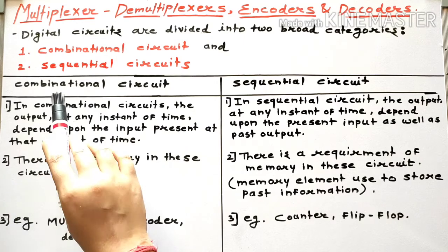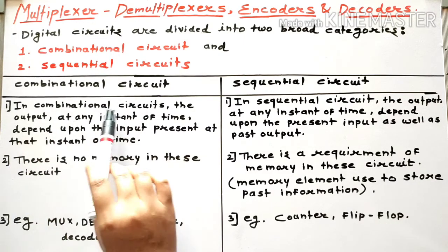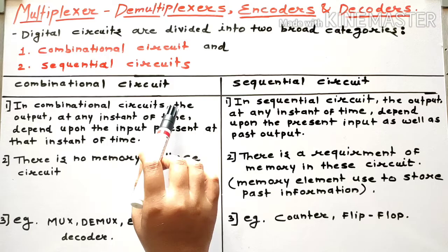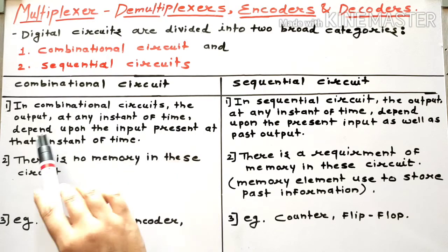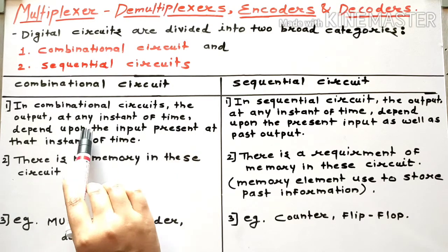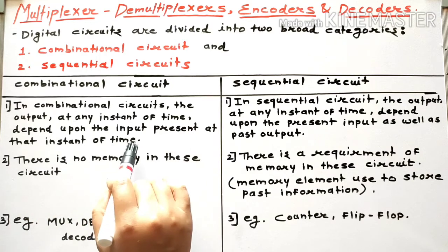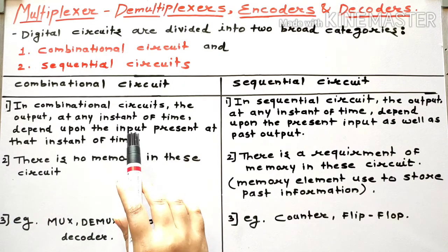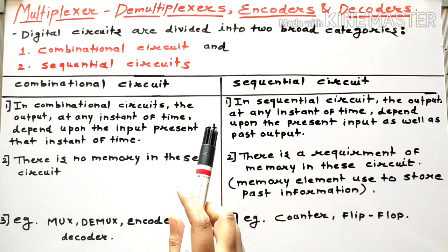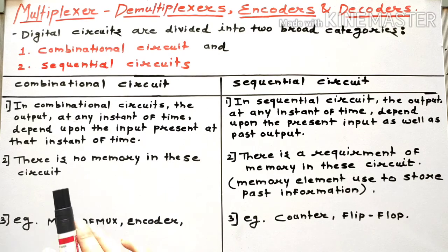First, let's come to the combinational circuit. In a combinational circuit, the output at any instant of time depends upon the input present at that instant of time. So in case of a combinational circuit, the output depends only upon the input which is present at that time.